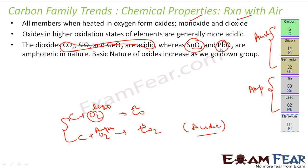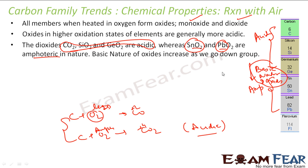SnO2 and PbO2 are amphoteric in nature. As you go down the group, the basic nature of oxides increases. This is similar to the trend we have seen in the boron family.